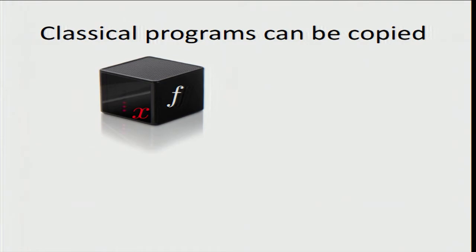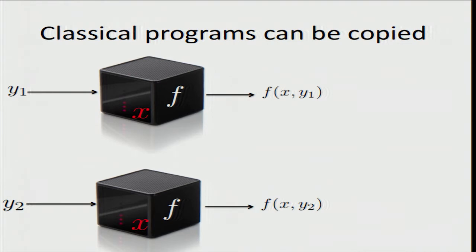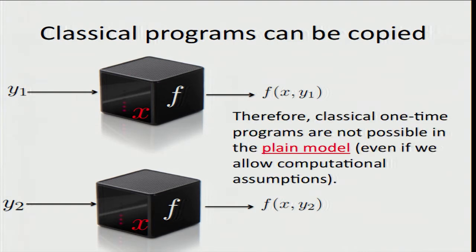The problem, of course, is that information can be copied. So if a receiver obtains a piece of software implementing a one-time program, the receiver can simply make a copy of that program and execute it twice. As a result, one-time programs are impossible in the plain classical model, meaning without additional assumptions, and that holds even if we allow computational assumptions.